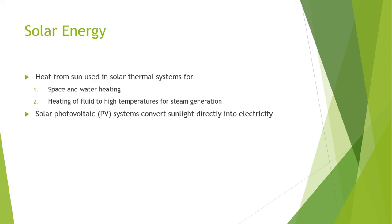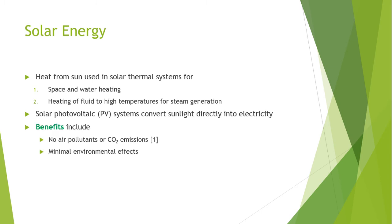A solar photovoltaic system converts sunlight directly into electricity. Solar photovoltaic panels are also known as solar cells. Solar cells are made up of a semiconductor material, usually silicon, which captures sunlight and converts solar radiation into electricity. When light falls on the semiconductor, the electric field across the junction between the two layers causes electricity to flow, generating DC current.